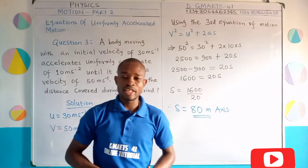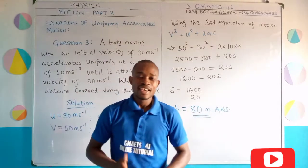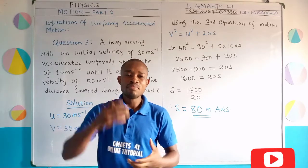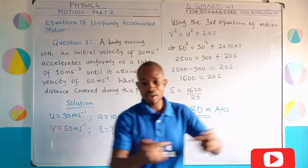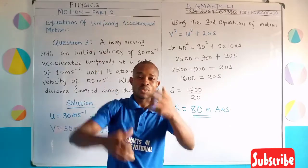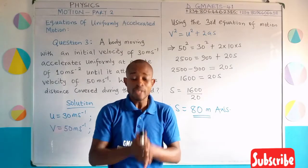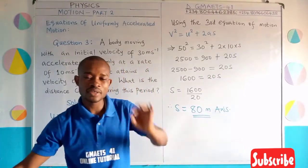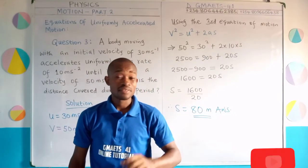We've successfully learned how to use the equations of motion to solve problems. In our next class, I'll be teaching you how to solve problems when dealing with motion under gravity. Since the type of motion we've been treating is along a straight line horizontally, when the motion is vertical — something moving up or falling down due to the force of gravity pulling it toward the center of the earth — we'll use the equations of motion to solve those problems too.